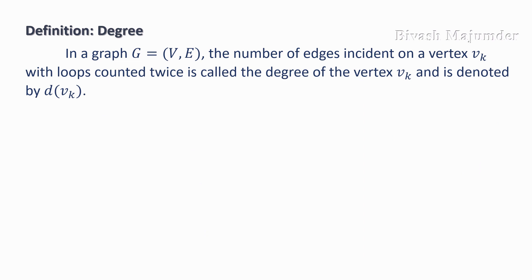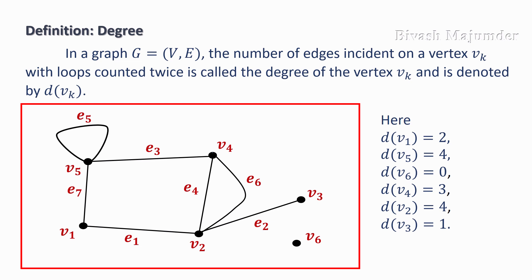Now, we look into the definition of degree. In a graph G, the number of edges incident on a vertex vk with loops counted twice is called the degree of the vertex vk and is denoted by D(vk). In this picture, we see the degree of different vertices.